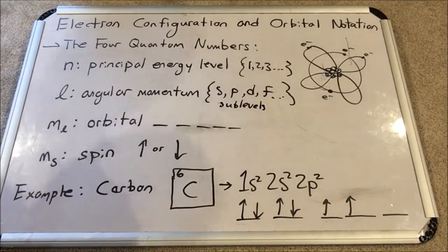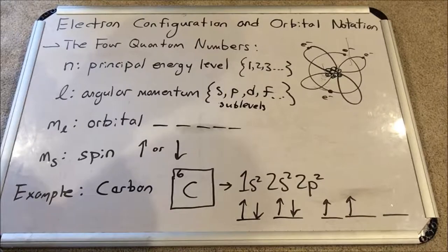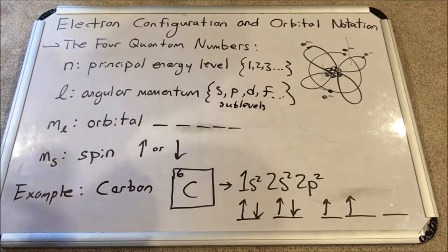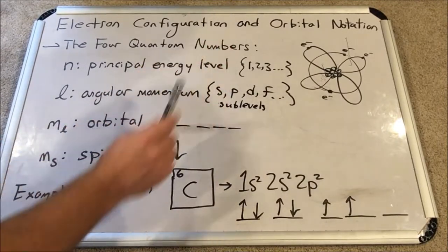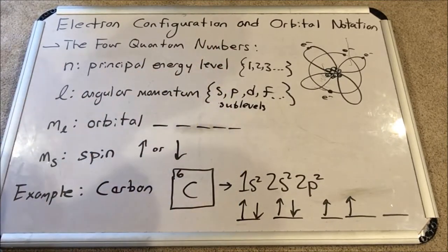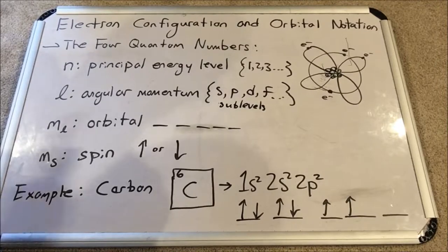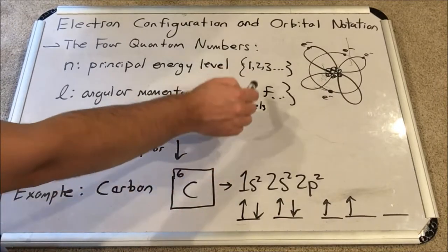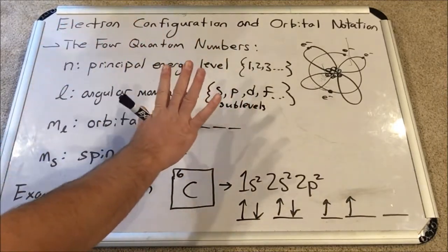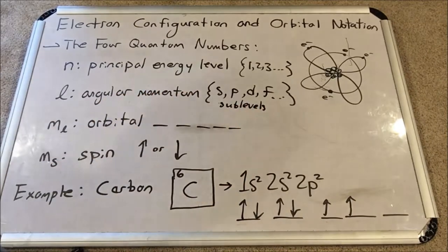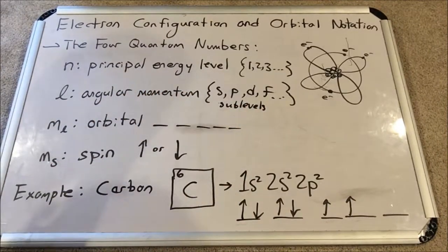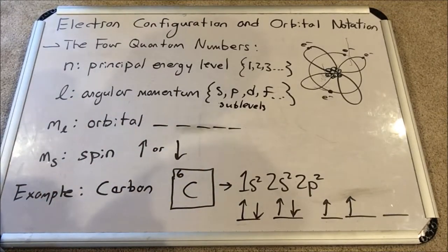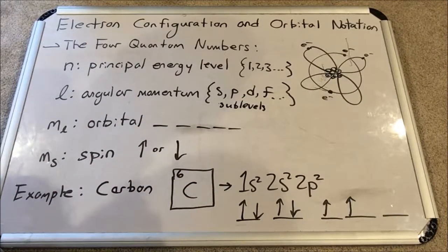ML is called the orbital quantum number. We think of it in high school chemistry as an orbital and each of the orbitals is given a line. Depending on which sublevel you're in, you have a certain number of orbitals. Each S sublevel has one orbital, each P sublevel has three, each D sublevel has five, and each F sublevel has seven. These are like houses that the electrons live in.